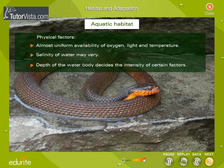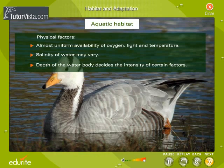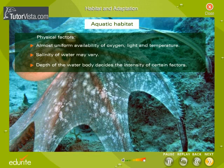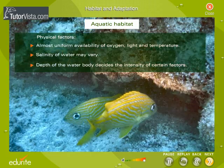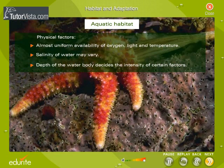The physical factors, though similar to terrestrial habitat, differ in their intensities. The medium of the habitat, water, varies in its content of dissolved salts. The variation is from fresh water to extremely saline conditions in oceans. Only dissolved oxygen in water is available. Light intensity varies according to the depth of the water body. Temperature varies depending on the depth of the water, but extreme fluctuations are rare.